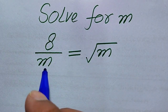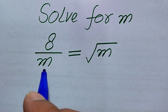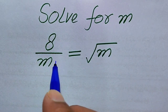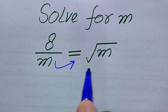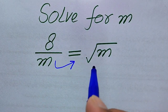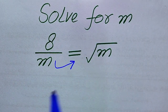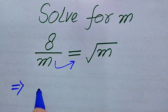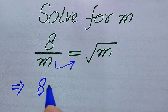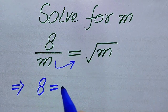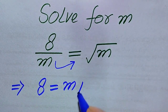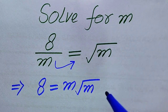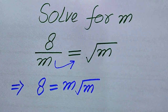Here, m is in the denominator on the left hand side, so we need to move it to the right hand side. When we move it to the right hand side, it is multiplied by the square root of m. After moving this, it will be written as: 8 equals m times square root of m.